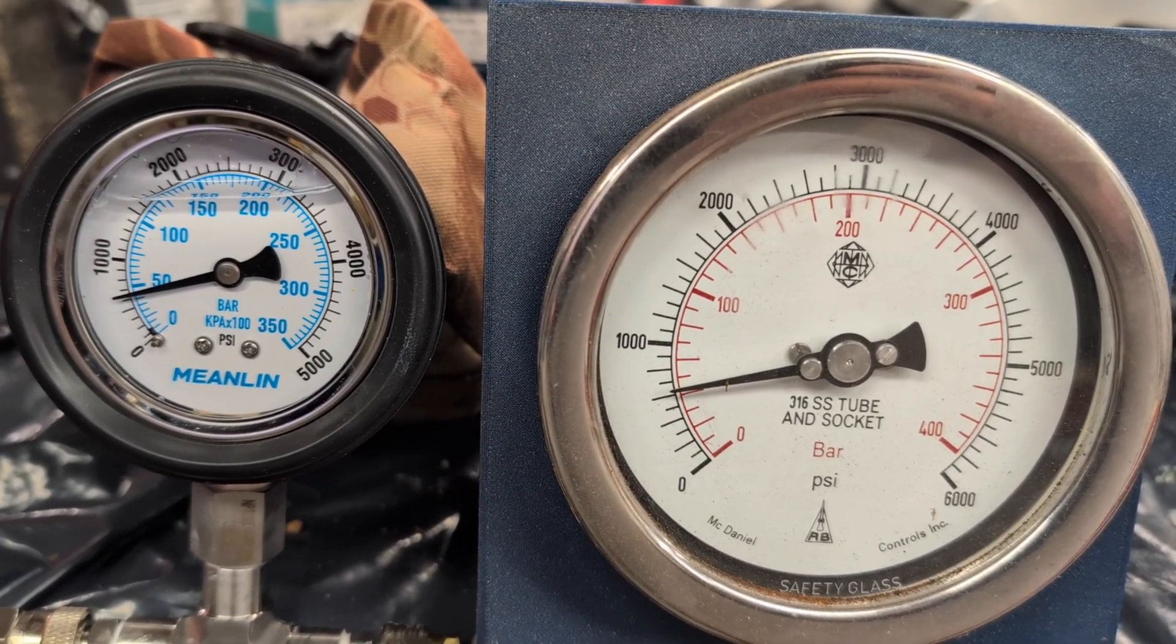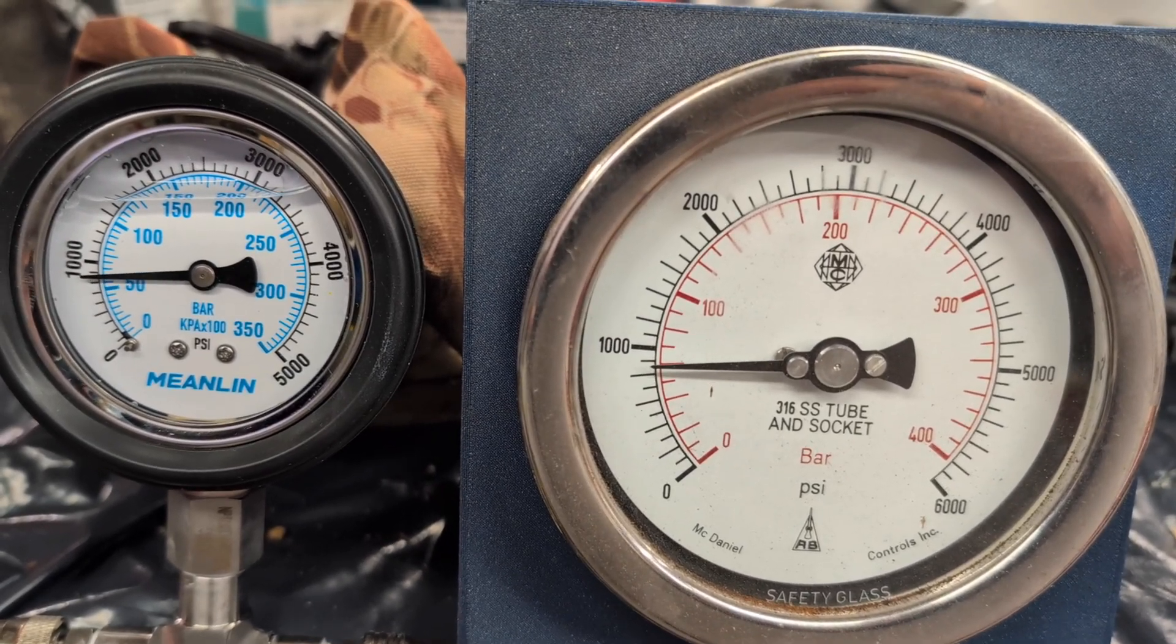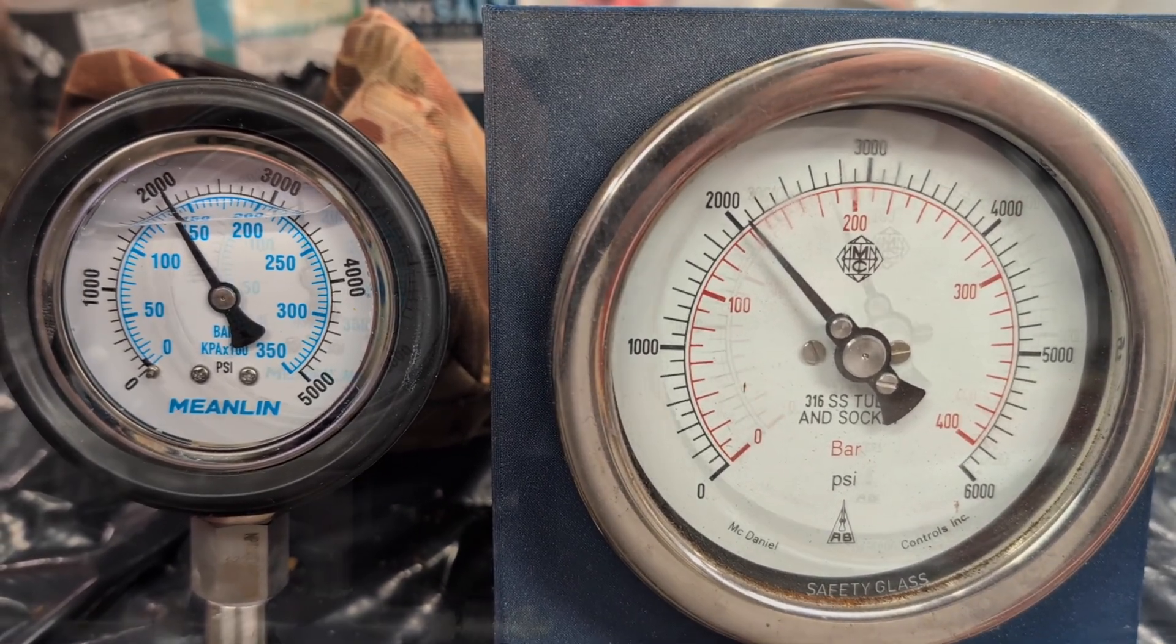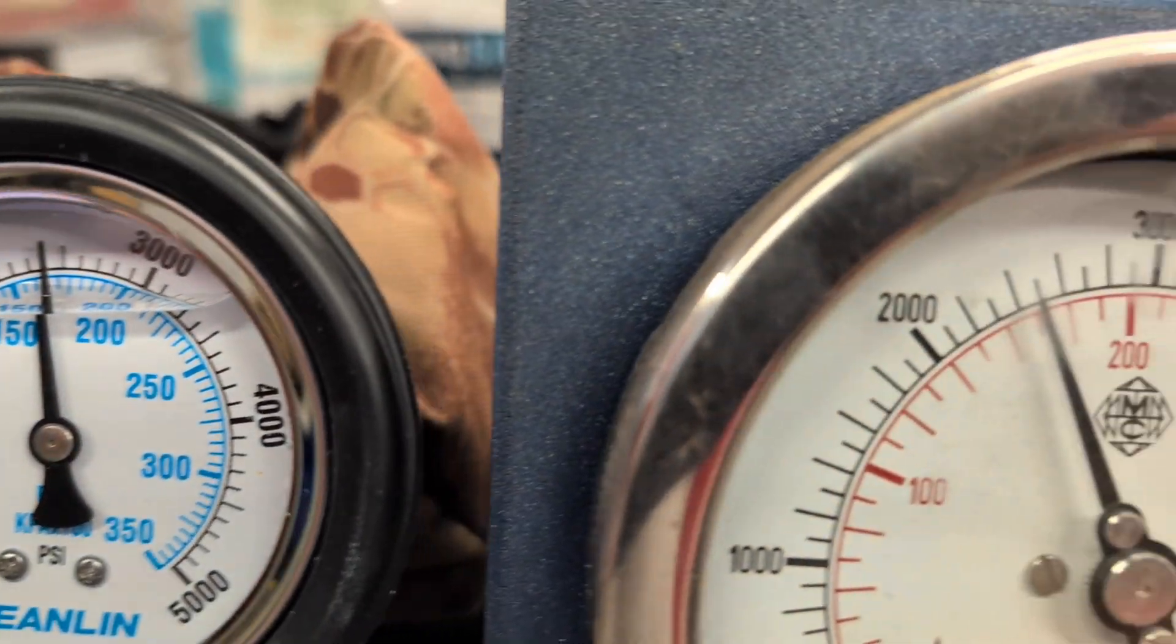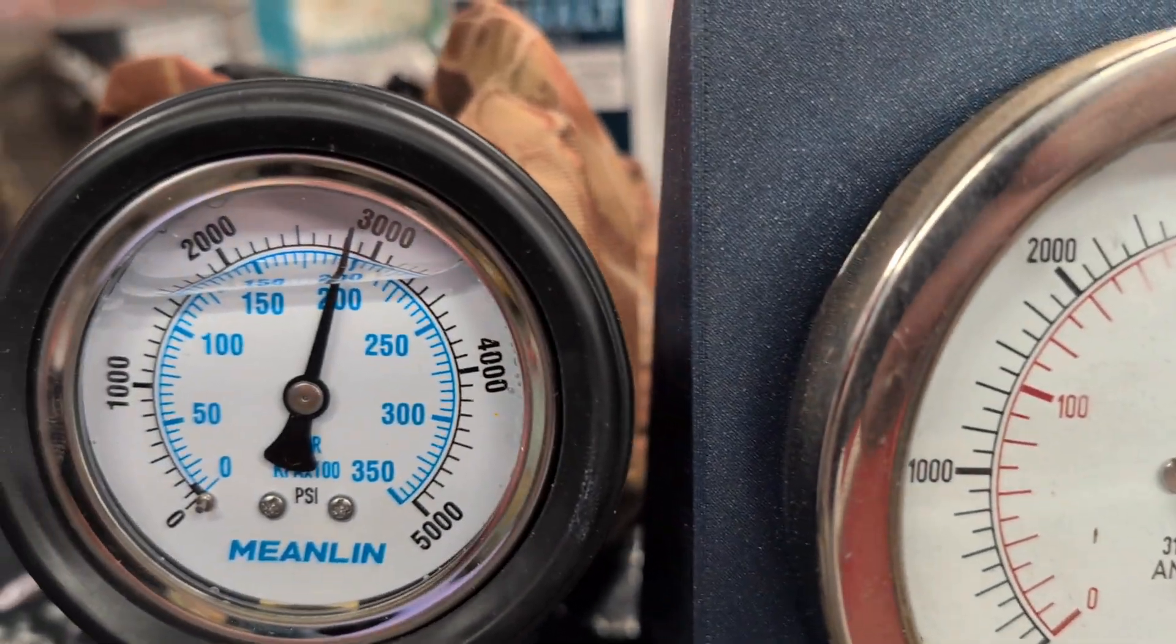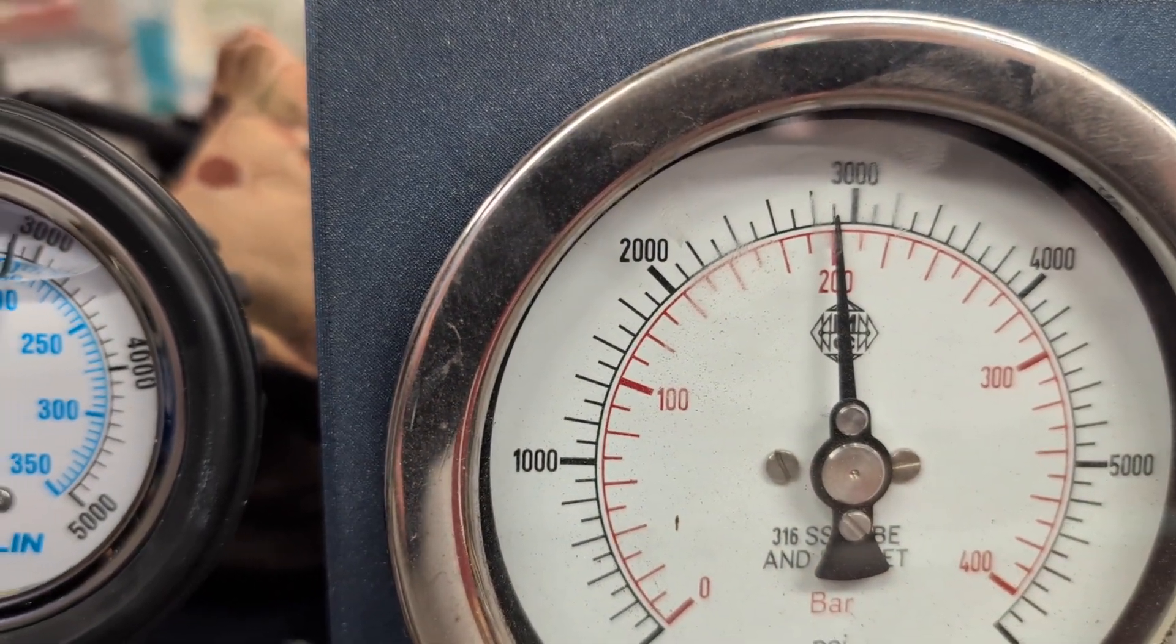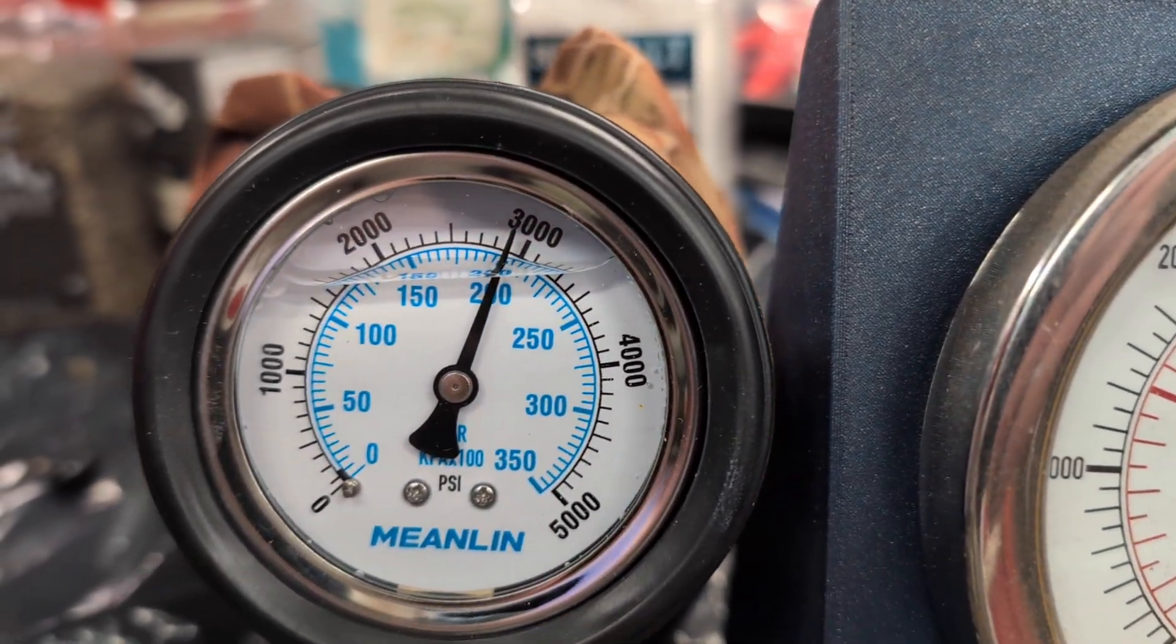Now here I'm running this against what I consider my reference gauge. This was a very big, very expensive gauge out of an industrial plant that I picked up and had calibrated, and it is exceptionally accurate. This gauge, for its price, is tracking it exceptionally well. It's doing a great job. Here it is just crossing 200 bar and it's right on target. I gotta say, I'm really impressed with this inexpensive Meanling gauge. Goes all the way up to 5000 PSI.